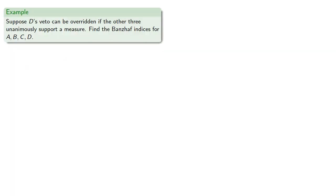Now in most situations where somebody has veto power, there's also a way to override the veto. So suppose D's veto can be overridden if the other three unanimously support a measure. Let's find the Banzhaf indices for A, B, C, and D.